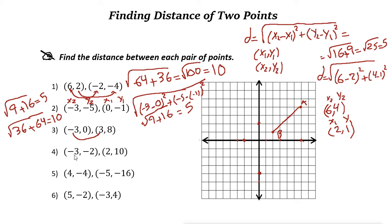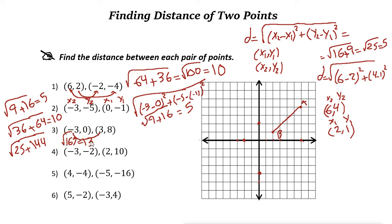Next one, same method. Negative 3 to 2: the distance is 5, because negative 3 is here and 2 is here — if you count, you get 5. 5 squared is 25. Plus negative 2 to 10, the distance is 12. So 25 plus 144 equals 169, and the square root of 169 is 13. If you use a calculator, you can find it is 13. The distance of these two is 13.